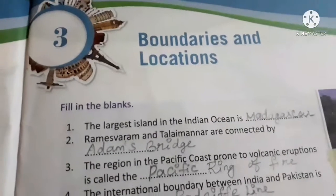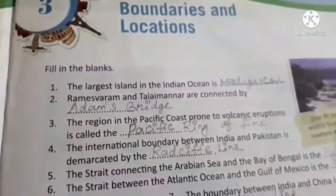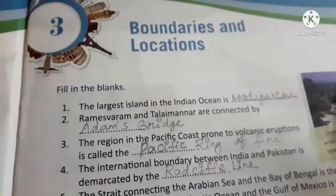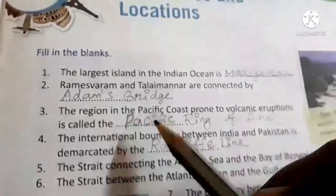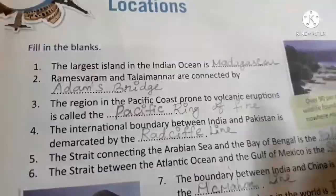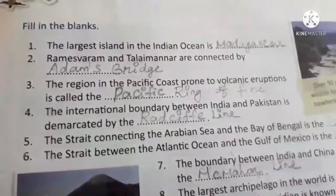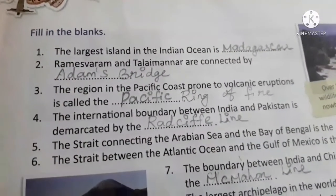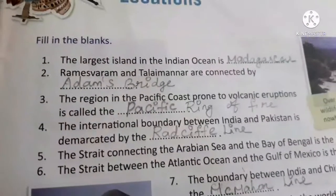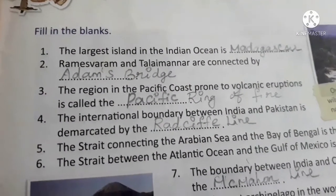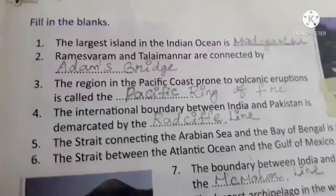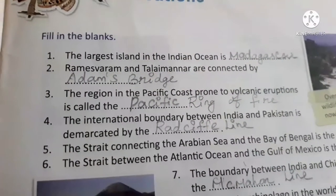Good morning students. Let us continue with our third lesson: Boundaries and Locations. The largest island in the Indian Ocean is Madagascar (M-A-D-A-G-A-S-C-A-R). Rameshwaram and Talaimannar are connected by Adams Bridge.